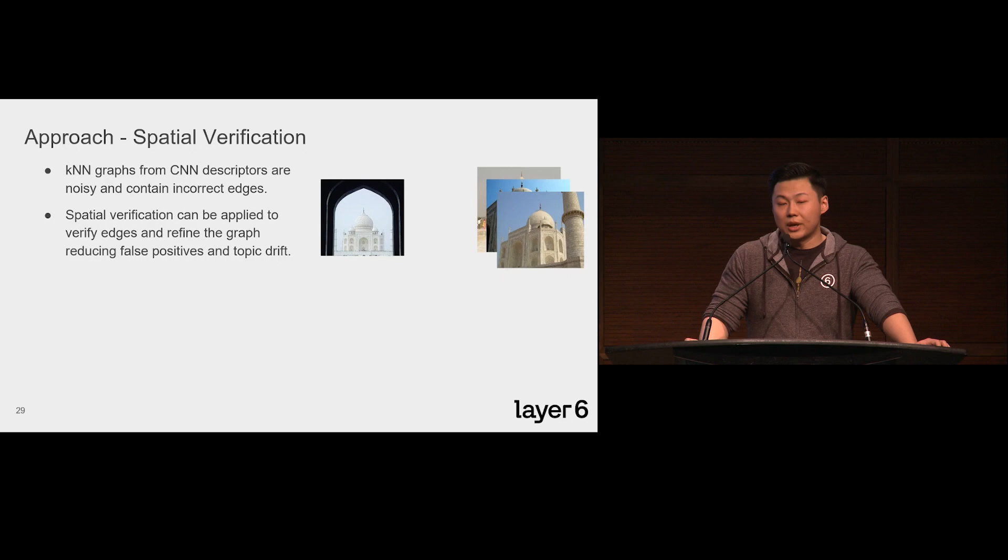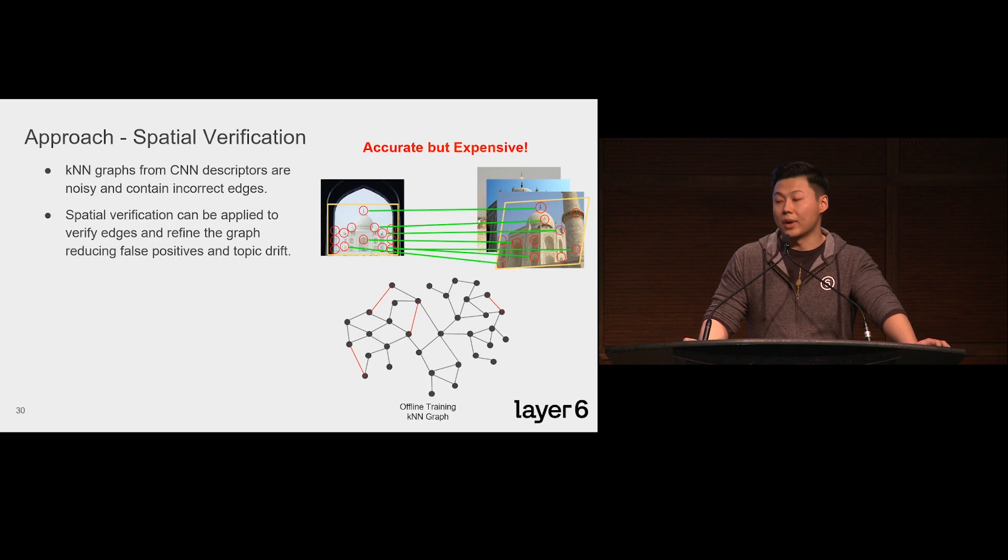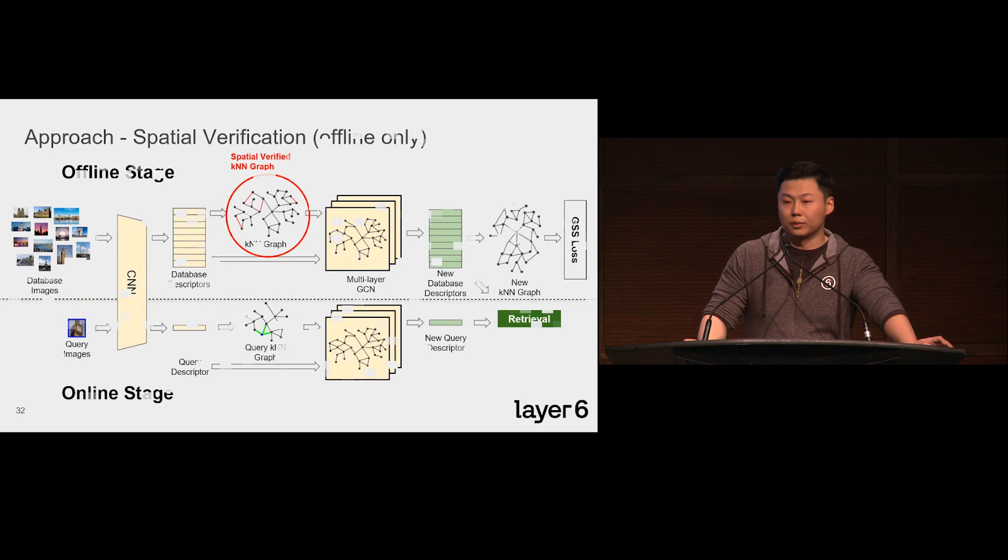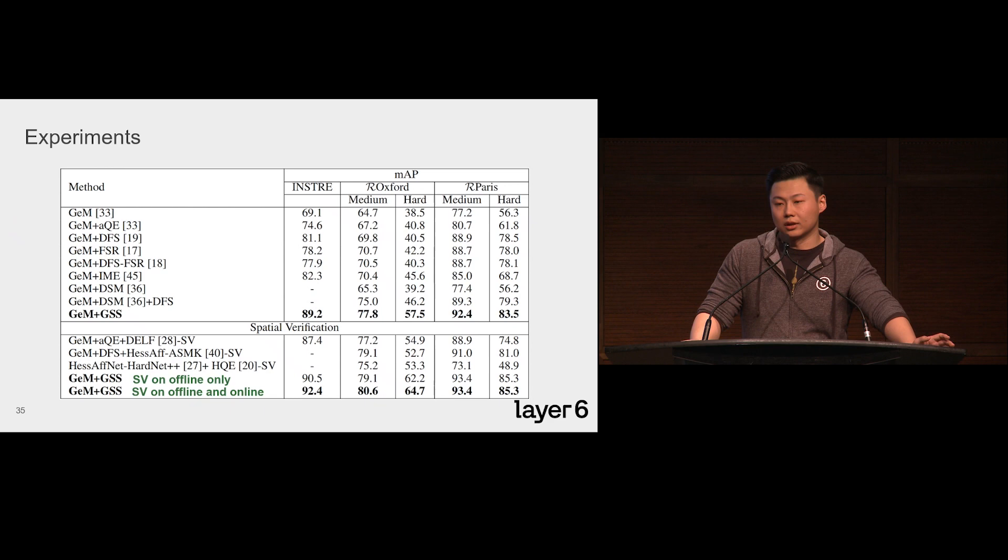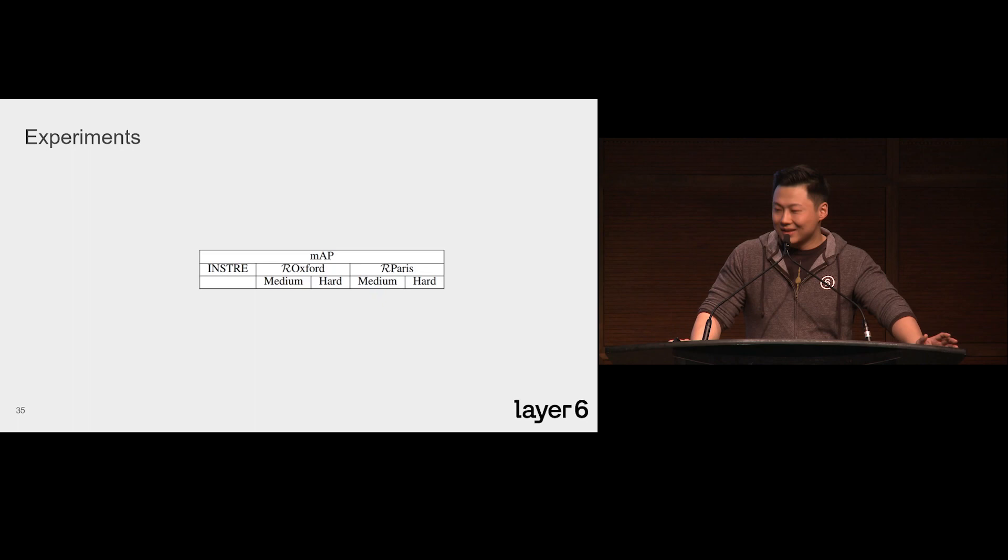Spatial verification is a commonly used technique for getting more trustworthy similarity scores for a pair of images. It requires generating local descriptors and matching local regions between them. While it improves the quality of the graph, computationally it is very expensive. Since our model is able to encode the graph information into a new descriptor space, so during the offline training stage, we applied spatial verification to verify the edges of the training graph and pass it to the GCN to encode the spatially verified graph information into the new descriptors. This gets a stronger result without adding any online runtime overhead. I'll talk about the result later in the experiment section. As another option, we can also verify the query graph to get even stronger results, but it comes with a longer inference time.